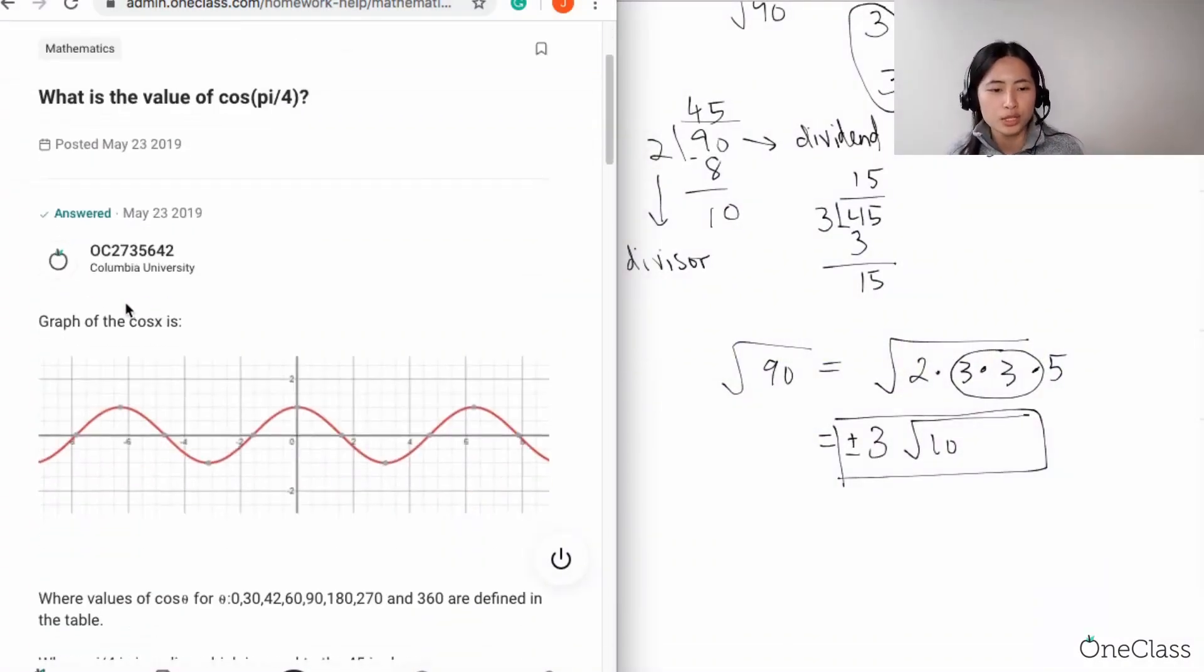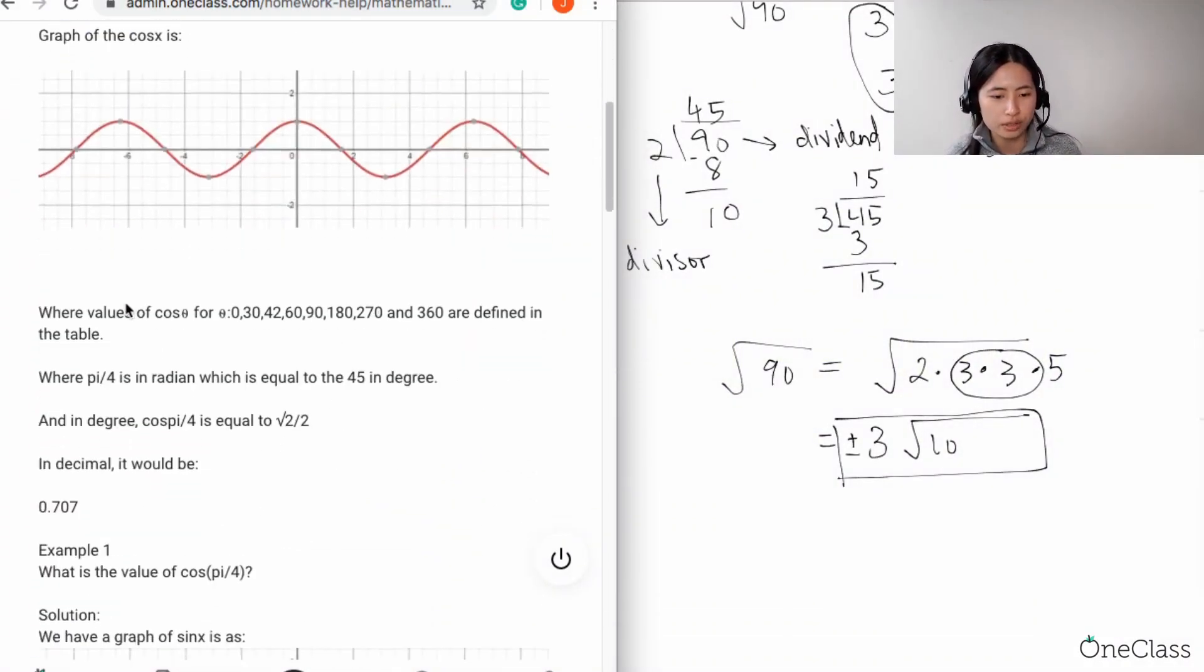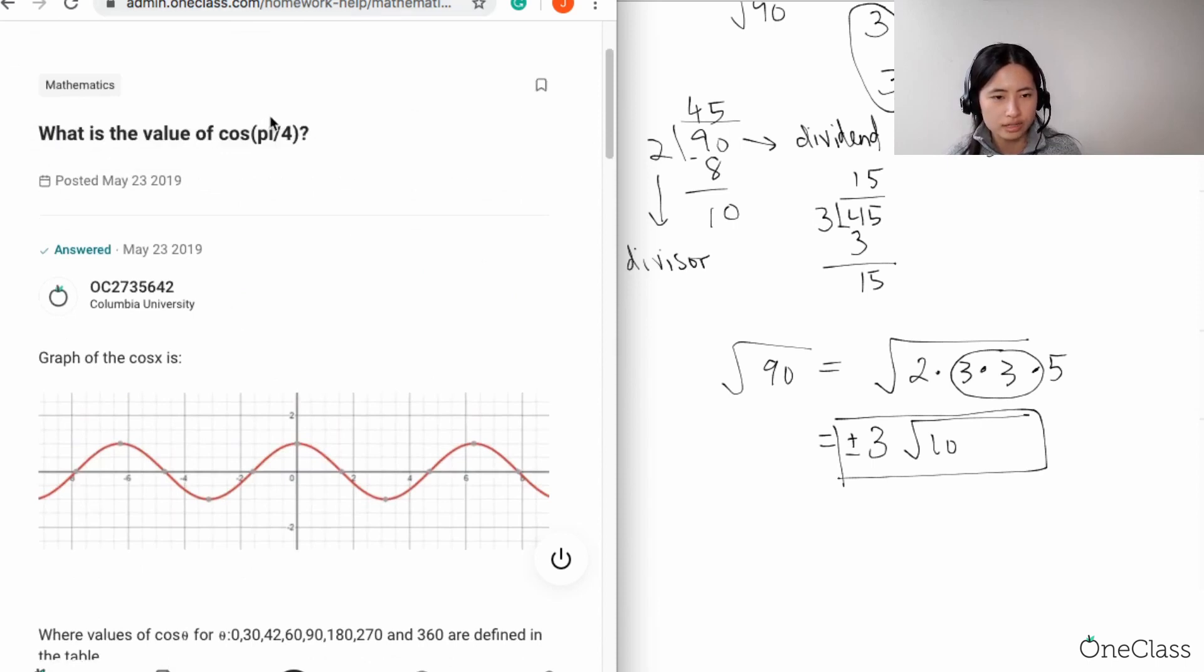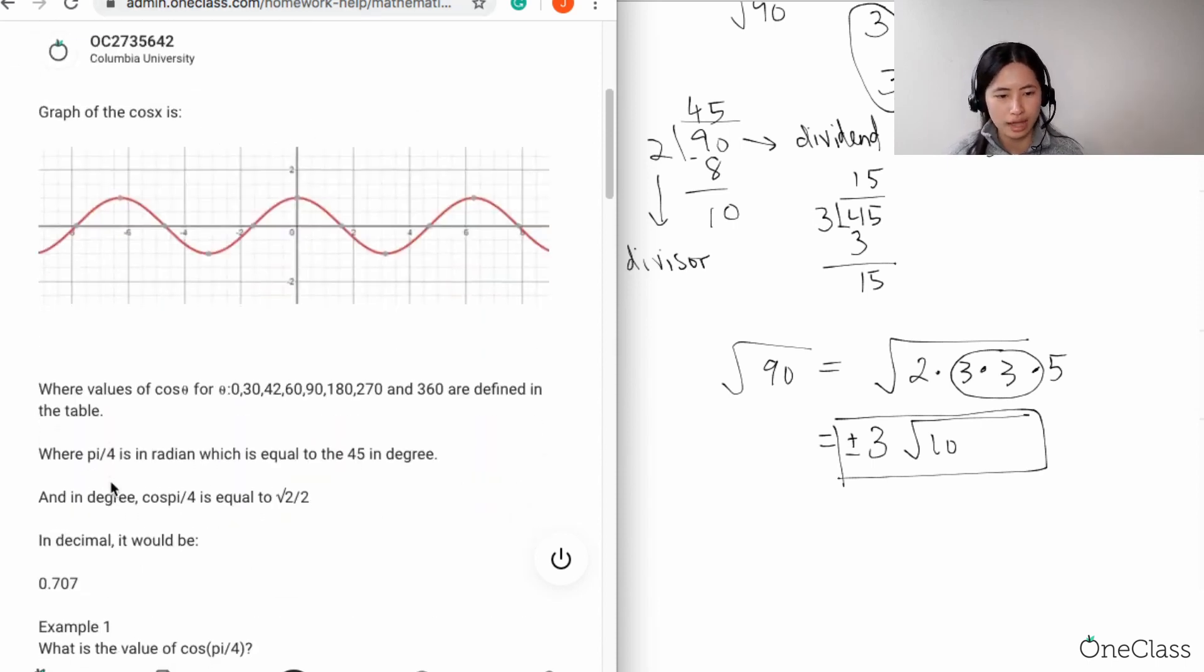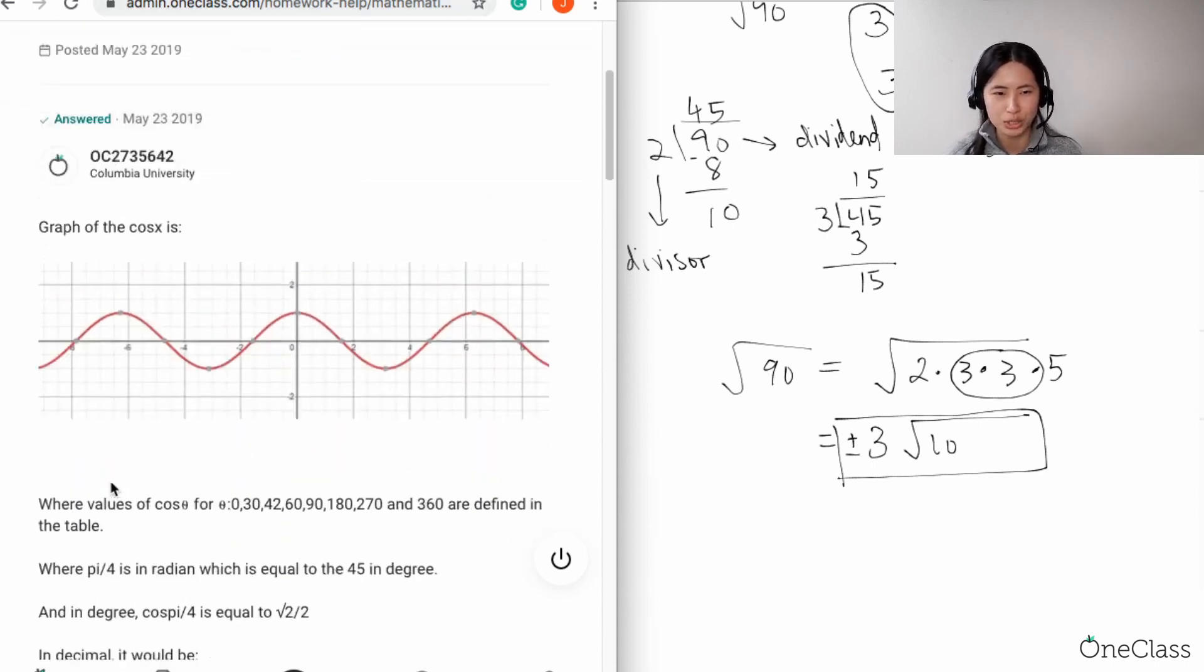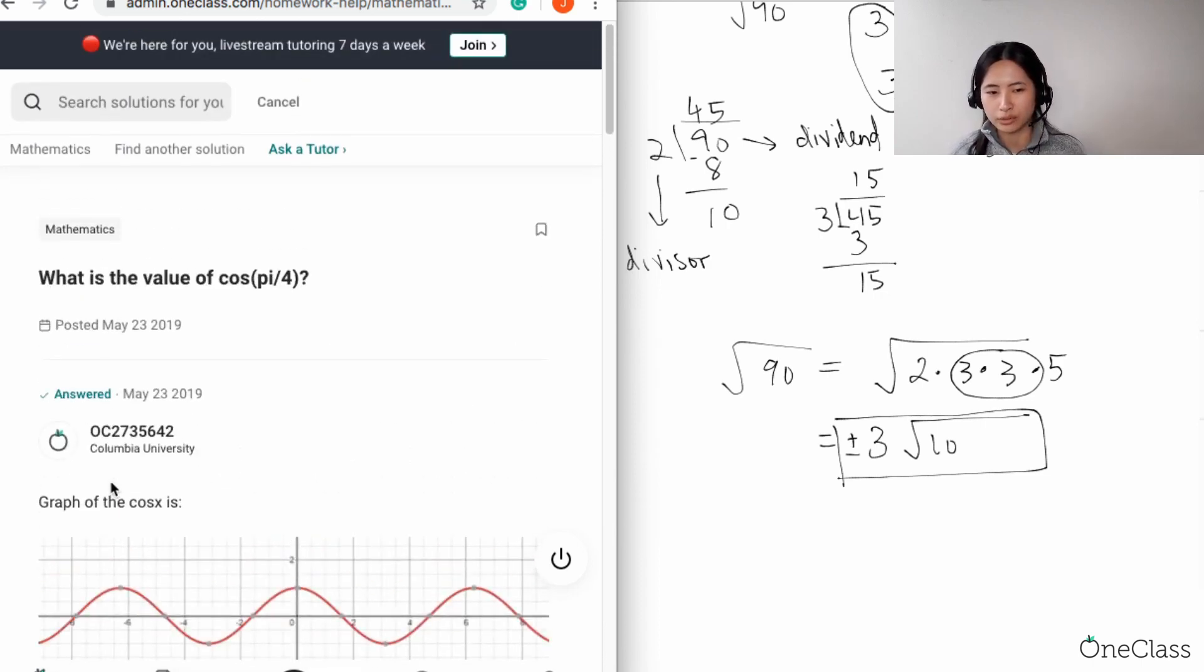Okay great, so this is where we're going to leave off I guess. Okay I think we still have enough time. Let's just do this question, so we have cosine pi over four.